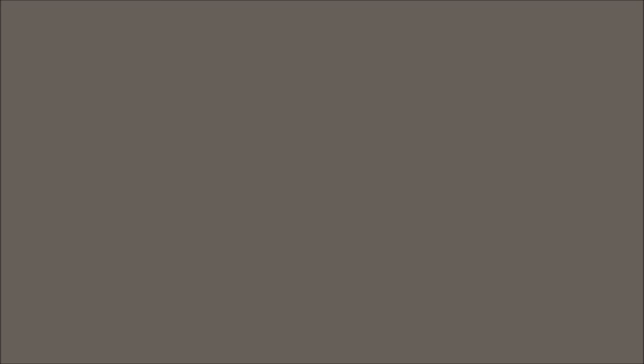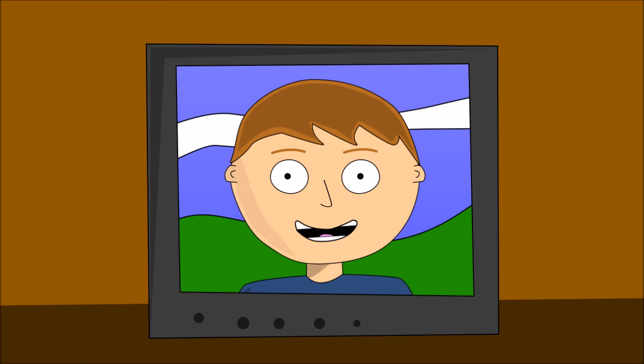These CRTs contain three electron guns, each corresponding to red, green, or blue dots of fluorescent material that cover the screen in a repeating pattern. These three colors of light can mix to produce any color image.